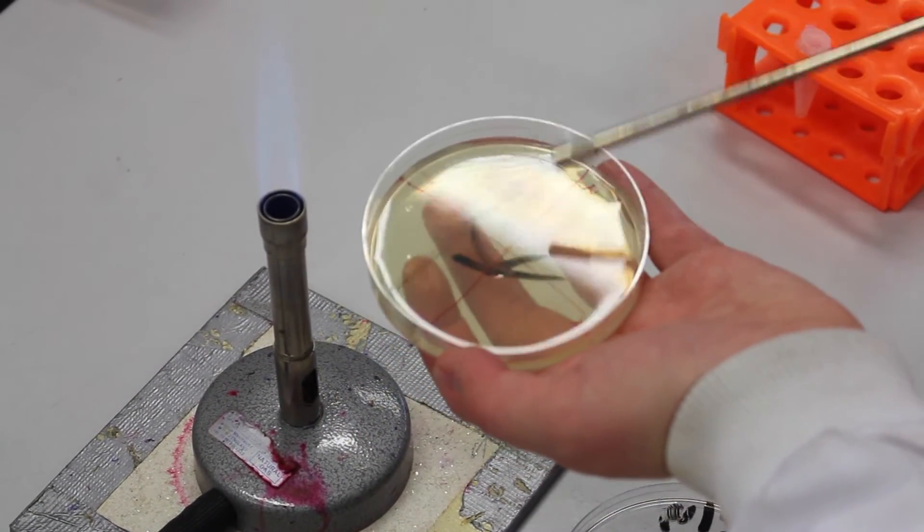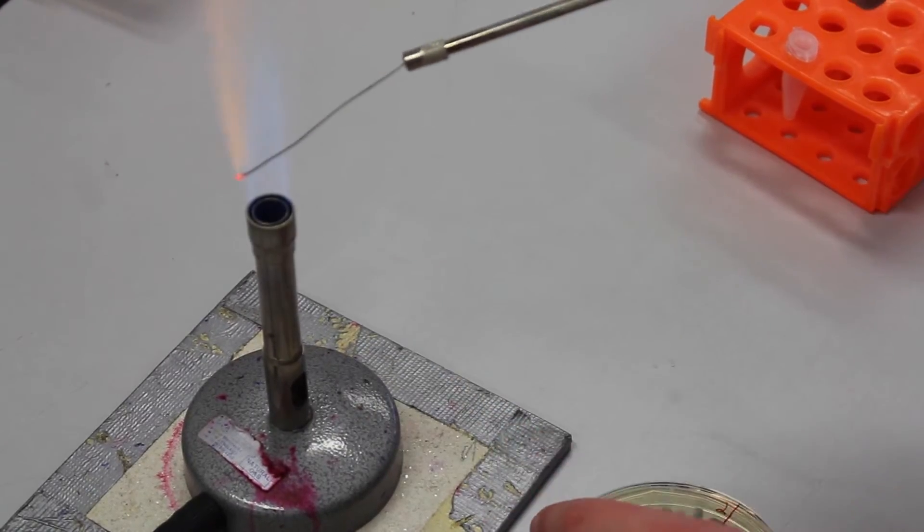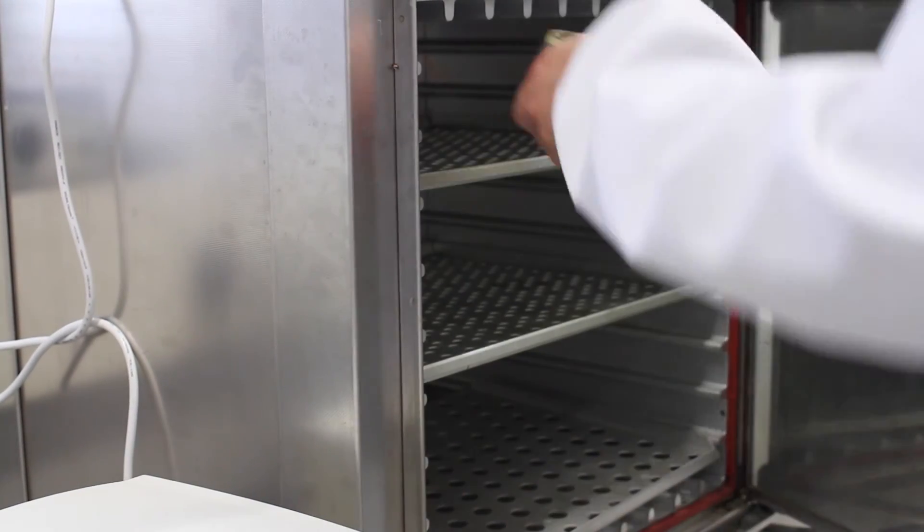Draw to and fro in one quadrant on the plate. Repeat the process for all the quadrants. Incubate plates overnight at 37 degrees Celsius.